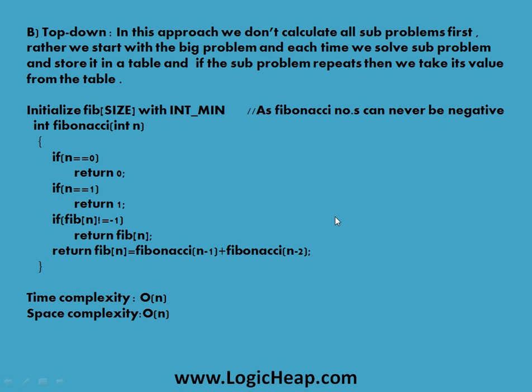Now let's see the second strategy: top-down. In this approach we don't calculate all subproblems first. Rather, we start with the big problem and each time we solve a subproblem we store it in a table. If the subproblem repeats, we take its value from the table. Initially we initialize the array with -1 at each index, because Fibonacci numbers cannot be negative.